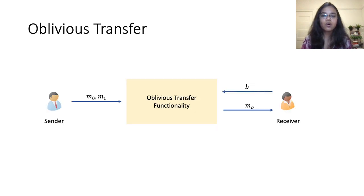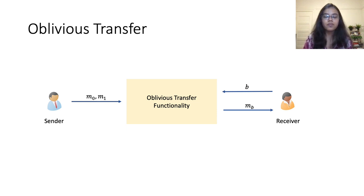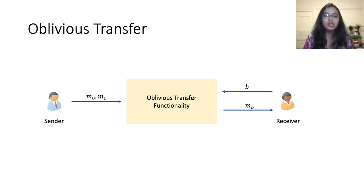To quickly recall the oblivious transfer functionality: this is a two-party functionality where the sender provides two inputs M0 and M1, and the receiver provides a single bit B as input. At the end of the protocol, the receiver receives M_B as the output. For security, we require that the sender should not learn anything about the receiver's input, while the receiver should not learn anything about the sender's other input that was not revealed as part of the output.